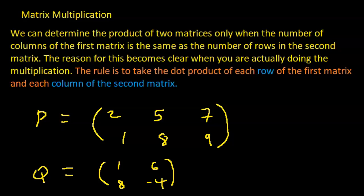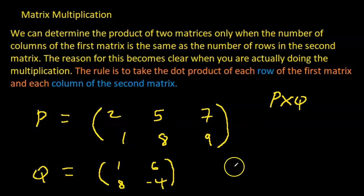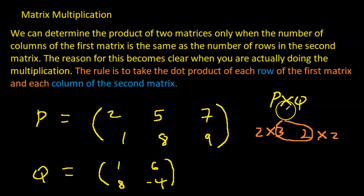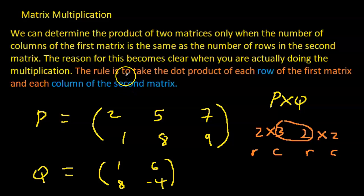Now here we have two matrices P and Q. Is it possible to multiply P times Q? Let's check. P has two rows and three columns, so P is a 2×3 matrix. Q is a 2×2. The number of columns in the first matrix is 3, but the number of rows in the second matrix is 2 — these numbers are different, so this multiplication is not possible.